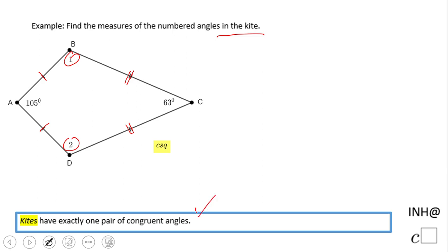One of them is this: kites have exactly one pair of congruent angles. And this picture really helps tell you which ones those are. If in your mind you said 'hey, angle 1 and angle 2 look like they are congruent,' you are correct. So measure of angle 1 equals measure of angle 2.